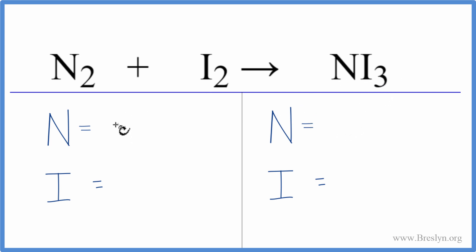To balance the equation, let's count the atoms up on each side of the equation. We have two nitrogens and two iodine atoms. On the product side, we have one nitrogen and three iodines.